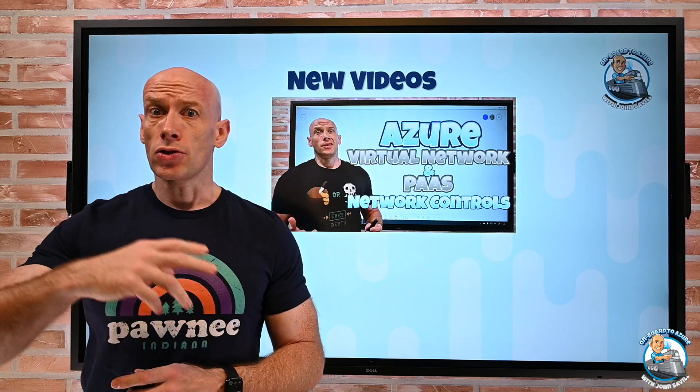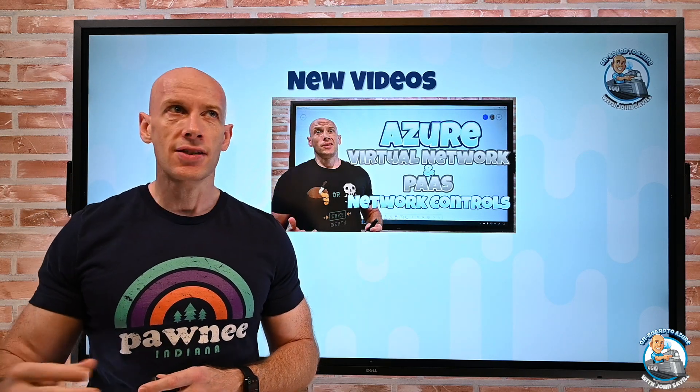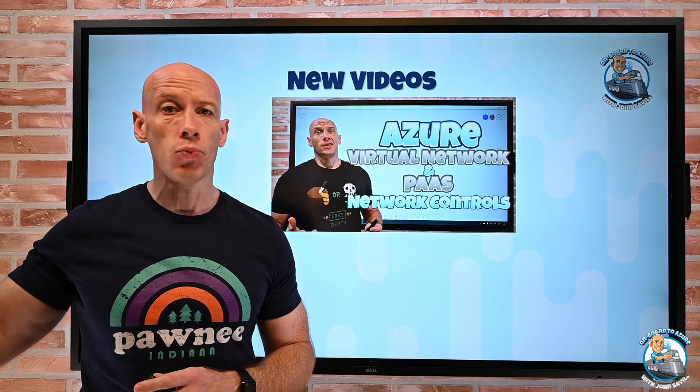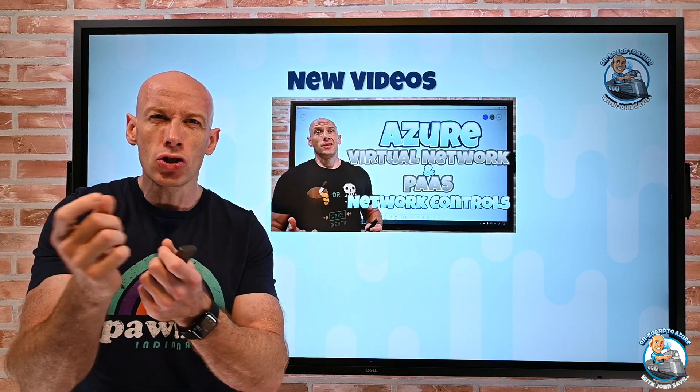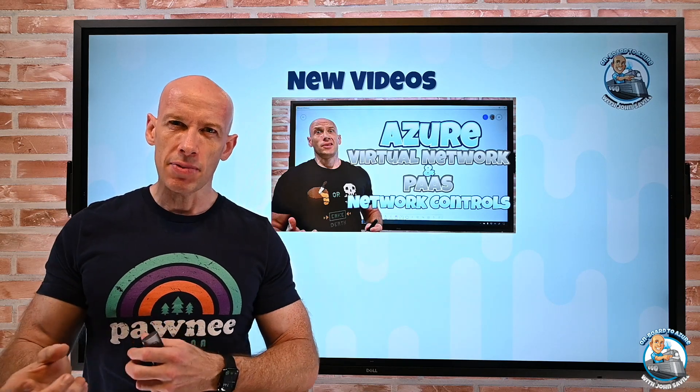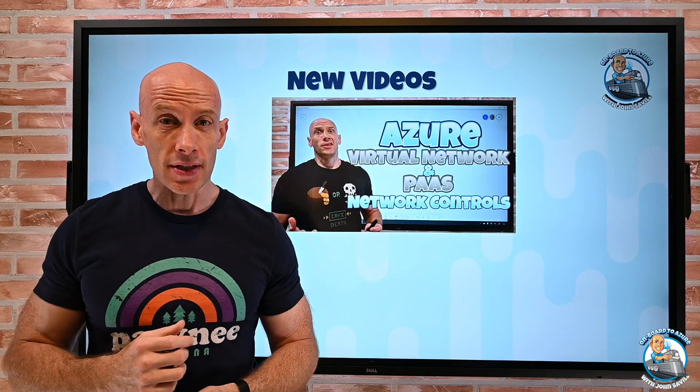So this goes into things like network security groups, service tags, service endpoints, service endpoint policies and private link. It's a kind of holistic approach to how I can control the connectivity between things in VNet and my PaaS services.